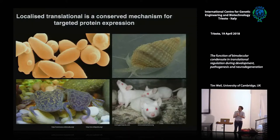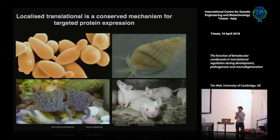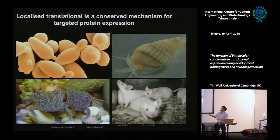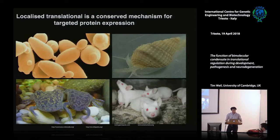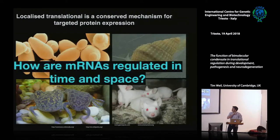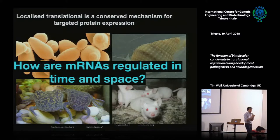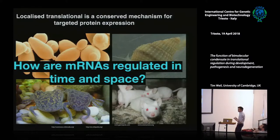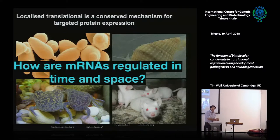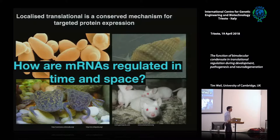As we said last time, localized translation is a conserved mechanism for targeting proteins to specific regions within a cell. We saw examples from yeast, snails, frogs, and mice. The question we're interested in is how mRNAs are regulated in time and space. We not only need to get them to the right place, we need to get them translated at the right time. In developmental biology, wrong timing is just as bad as wrong placement.